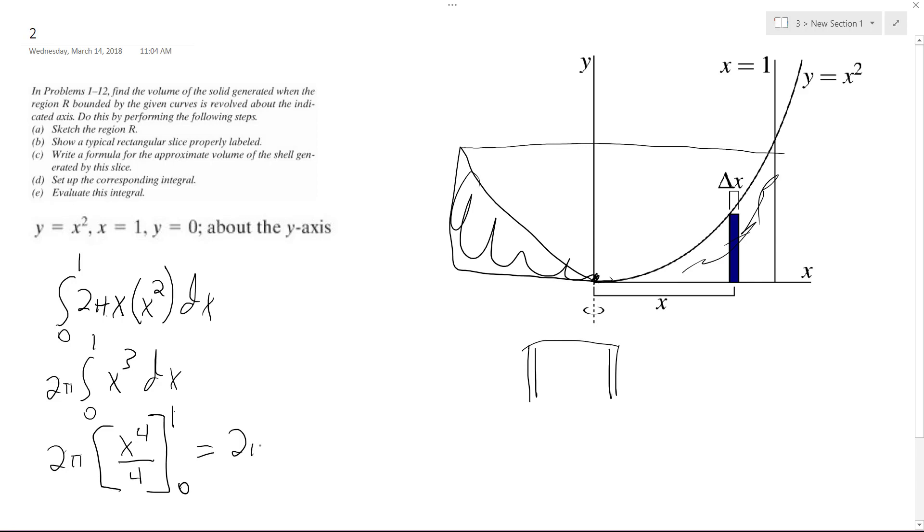And we're going to get two pi, and it's going to be one over four minus zero over four. So we just get one fourth, so it ends up being equal to two pi over four. And simplified down, the total area encompassed in what we have here is going to be pi over two.